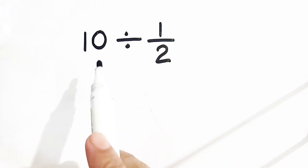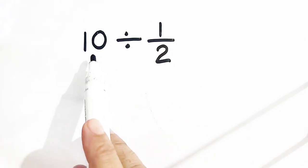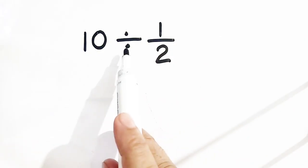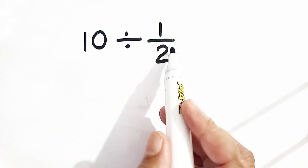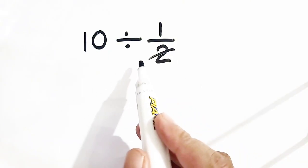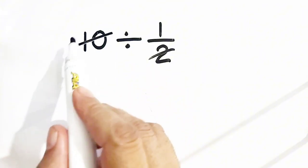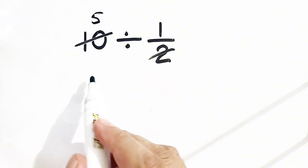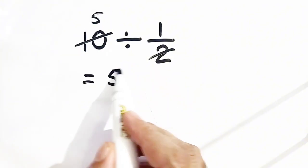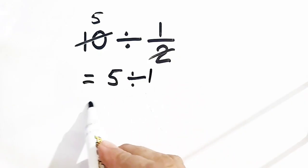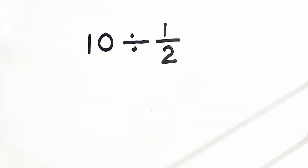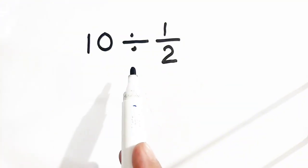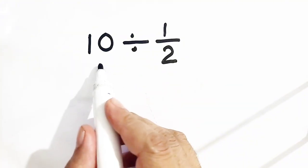Hello everyone, how are you? The question is 10 divided by half. Some people cancel 2 and 10, so the remaining is 5 divided by 1, which equals 5. But that is a wrong approach to solve this. We can solve this question by using KCF.